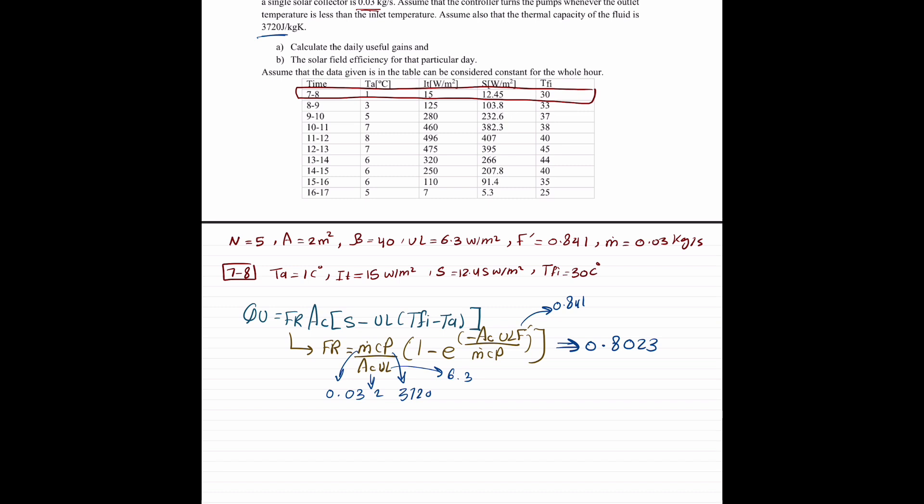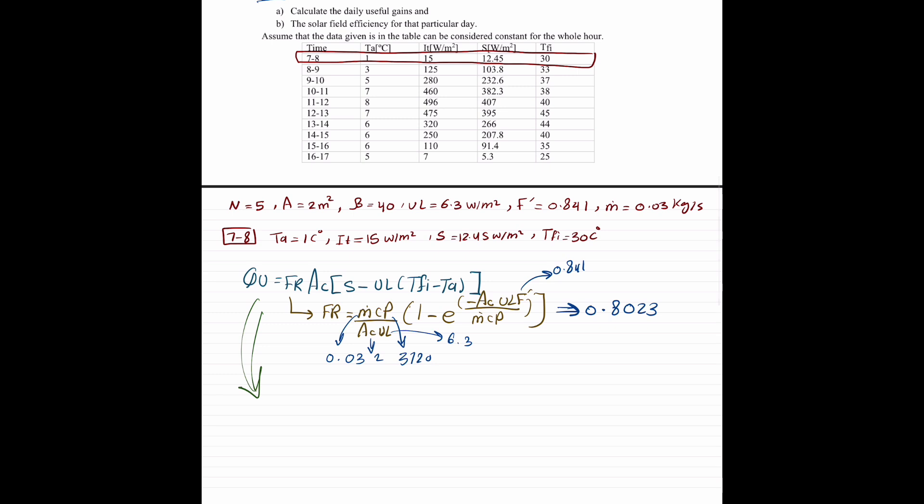Now going back to the first row again. FR is 0.8023, AC is 2, S is 12.45 minus UL is 6.3.